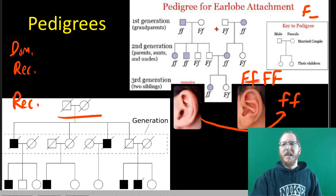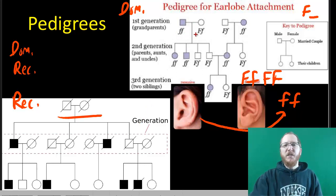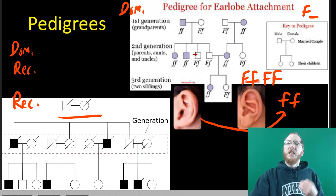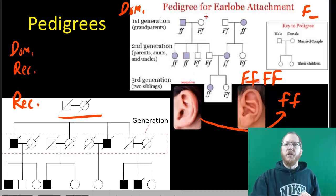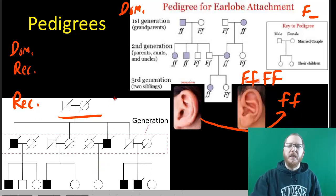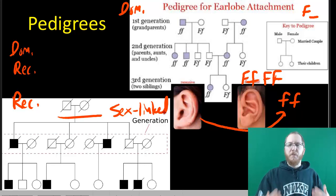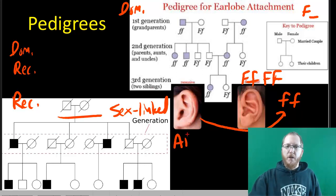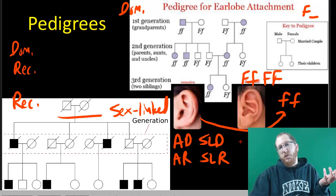Another clue is whether both sexes are affected equally. If there are plenty of girls and boys affected, it's probably autosomal. If you see nearly all boys affected, that's a red flag that the trait is likely sex-linked. When I ask about inheritance pattern, the options are autosomal dominant, autosomal recessive, sex-linked dominant, or sex-linked recessive. You won't see too many dominant disorders, but for traits like free earlobes, we can track dominant patterns.